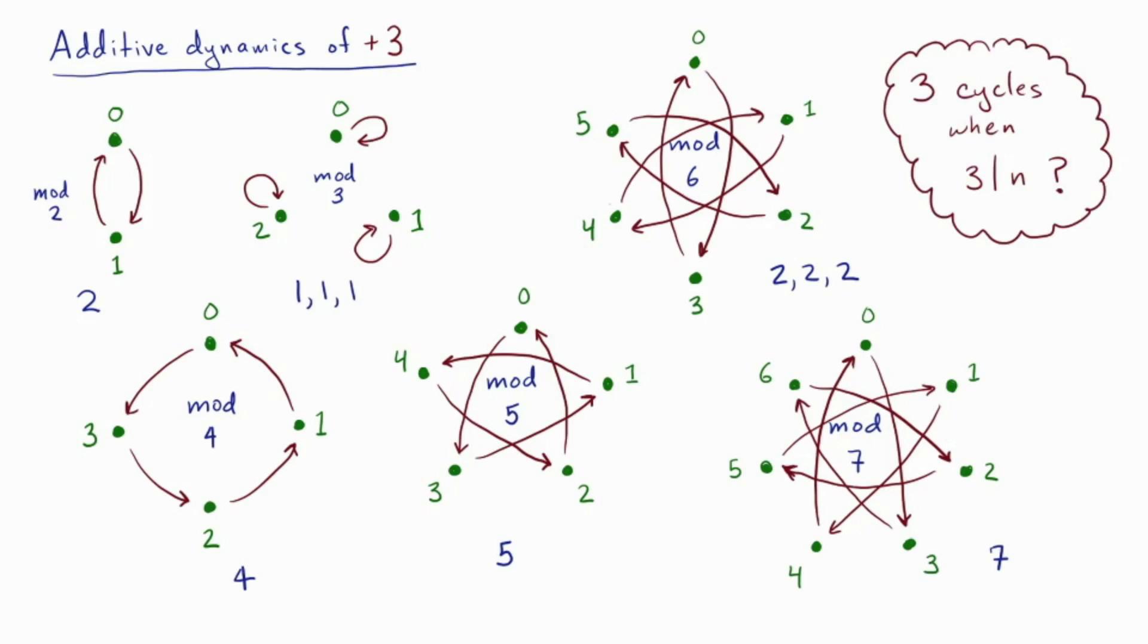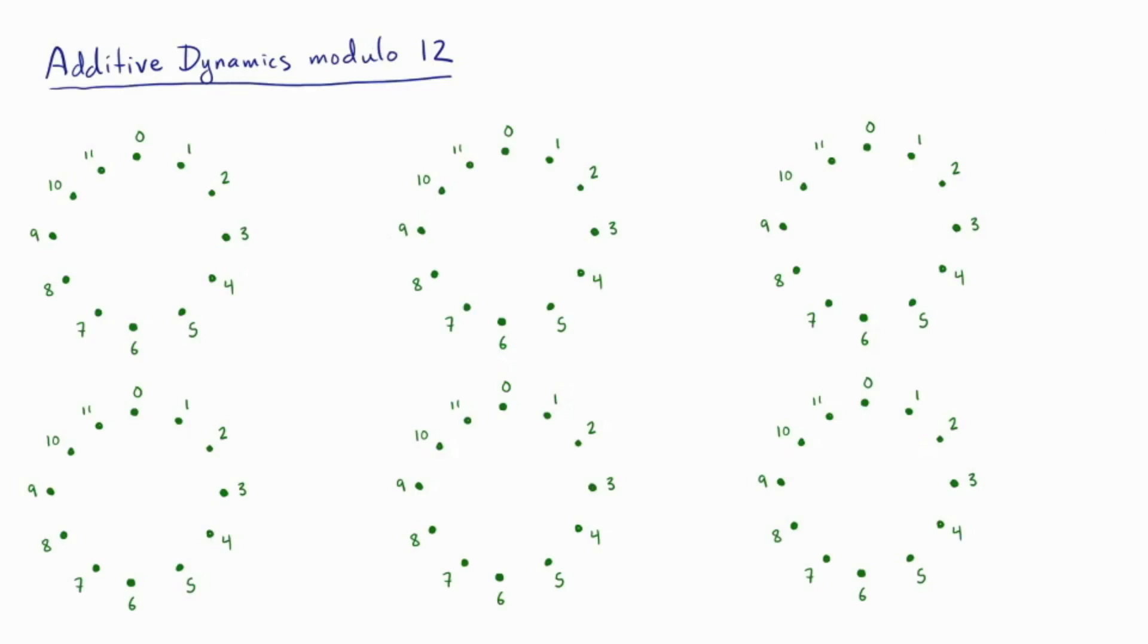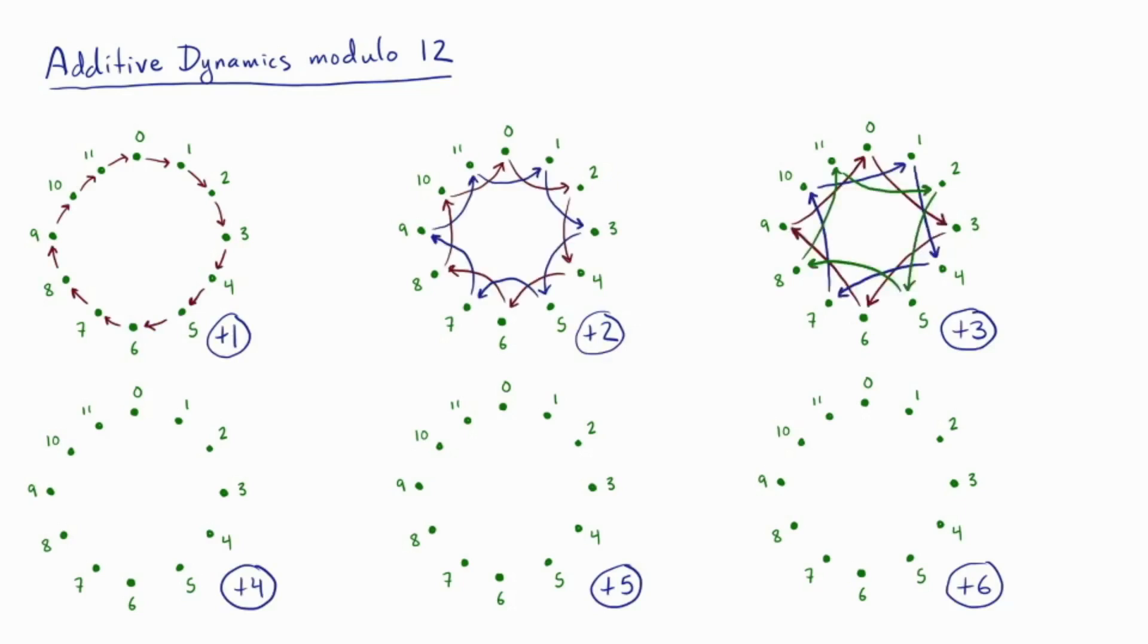Okay, so it looks like there's definitely patterns, but let's take another tack. Instead of fixing a and varying the modulus n, let's try fixing the modulus and varying a. So I've picked a modulus of 12 here because it's highly divisible, so we might see some of these different divisibility patterns, divisibility behaviors that we've been noticing. Okay, now let's try the additive dynamics of plus 1, plus 2, plus 3, plus 4, plus 5, and plus 6.